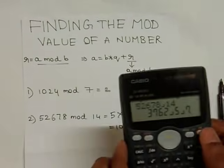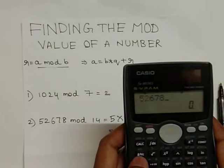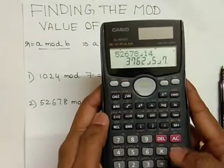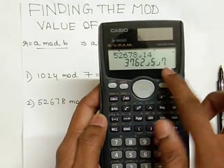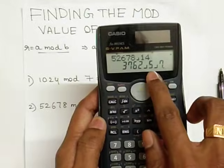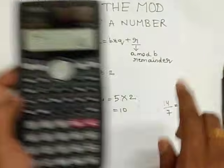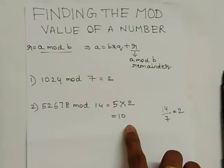So I will remind this again. 52678, press the button A by B C, enter the value 14. Since you are getting 7, and 14 by 7 is 2, the final value is 5 into 2. So that is the value for 52678 mod 14 equals 10.